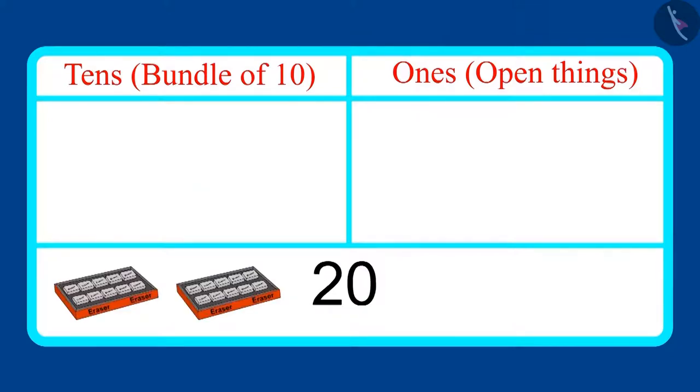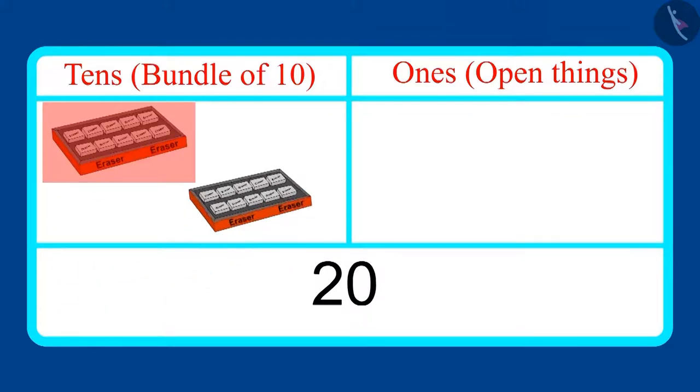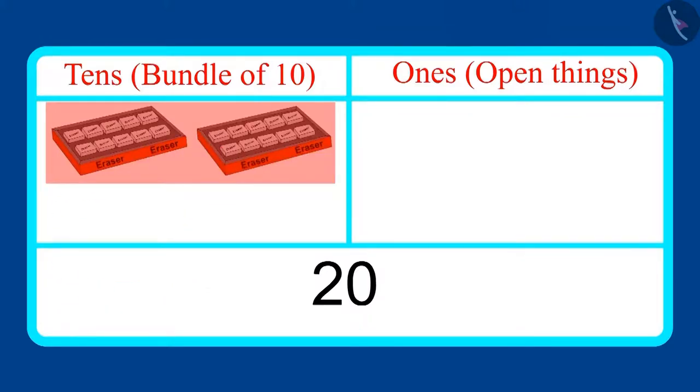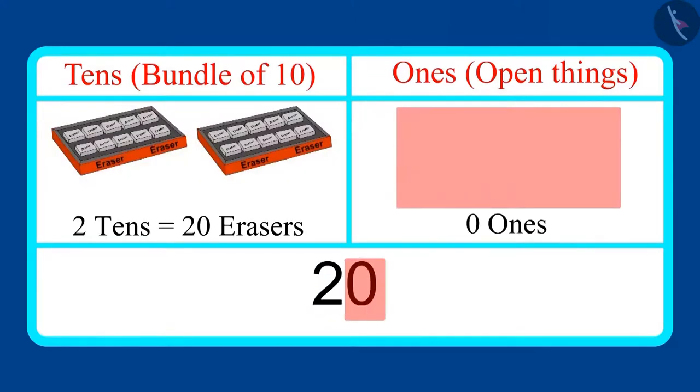Now, in the end, let's look at the number of erasers, which is twenty. Can you tell me how many ones and tens are there in this? This is a bundle of ten and there are ten more erasers left. That means there is another bundle of ten. We have two bundles of ten. Therefore, twenty has two tens and zero ones. Have you understood?